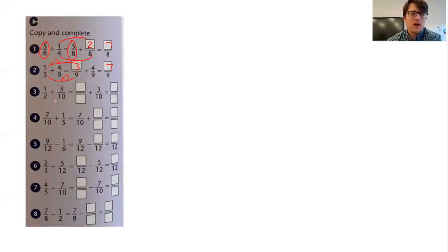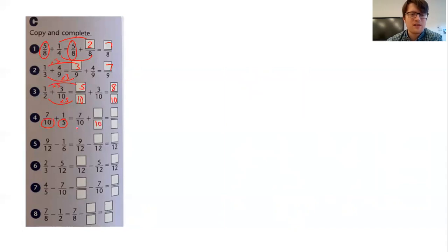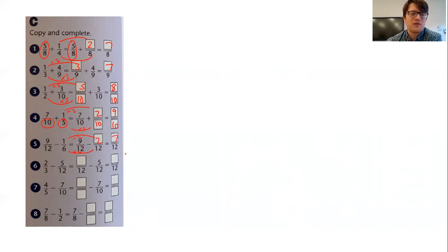One half and three tenths — I'm going to make my denominator ten so the denominators are the same. To get from two to ten, times by five, so I need to do one times five as well. Half is the same as five tenths; add three tenths gives me eight tenths. This time, seven tenths — I'm going to make my denominator ten, because five and ten both go into ten, so seven tenths can stay as it is. One fifth: I need to times five by two to make ten, so times one by two. Seven tenths add two tenths gives me nine tenths. Again, to get from six to twelve, times by two, times by two at the top — nine subtract two is seven twelfths.